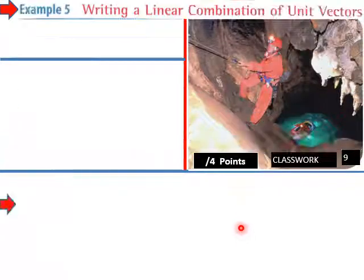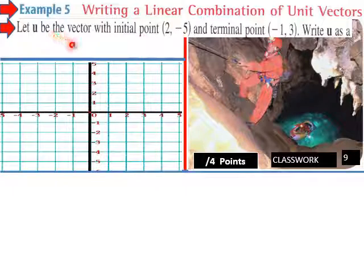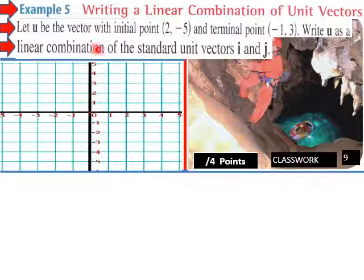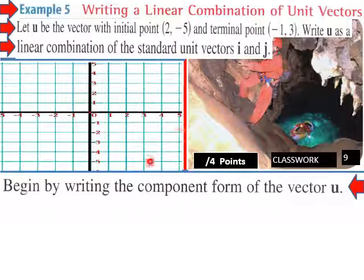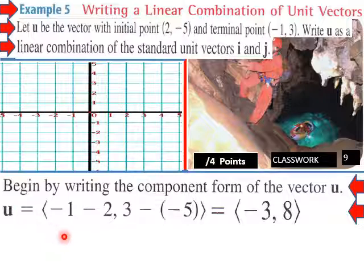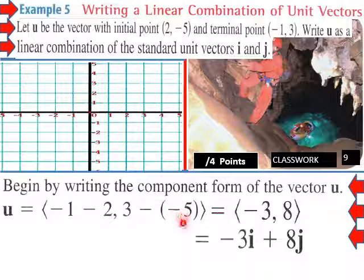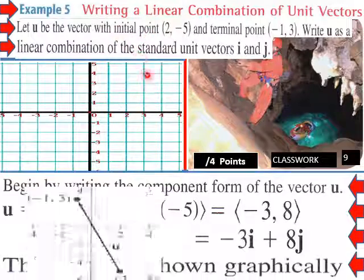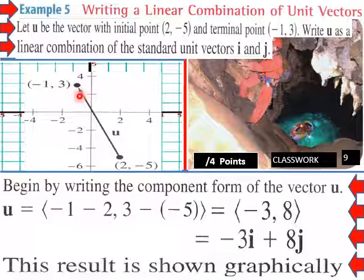Writing a linear combination of unit vectors: let u be the vector with initial point (2, negative 5) and terminal point (negative 1, 3). Write u as a linear combination of the standard unit vectors i and j. Begin by writing the component form: negative 1 minus 2 and 3 minus negative 5, which gives us negative 3, 8. Then we plug in: u equals negative 3i plus 8j. This result is shown graphically, with the origin at (2, negative 5) going in the direction of (negative 1, 3).